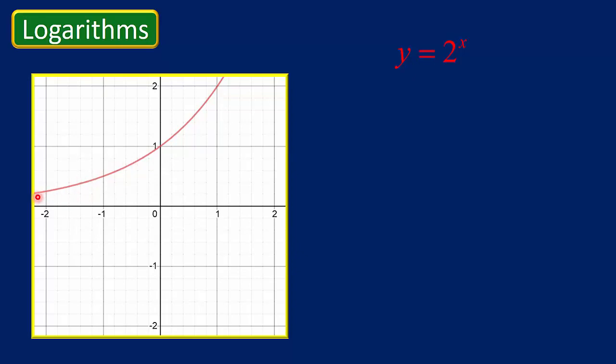Notice it's always increasing here. It has a domain, negative infinity to infinity. You can put in any of these x values. And it has a range, 0 to infinity. So it has a horizontal asymptote at y equals 0. And it never gets to 0. So the function goes from 0 to infinity, but it's never at 0. So this is the domain and the range of the exponential function.